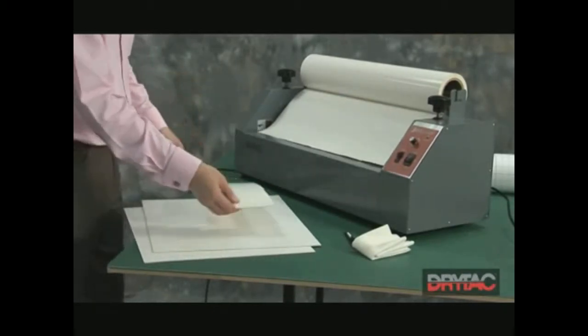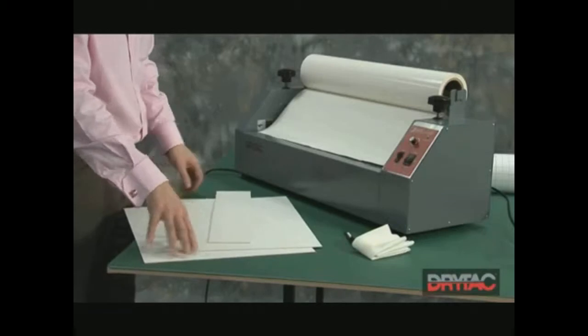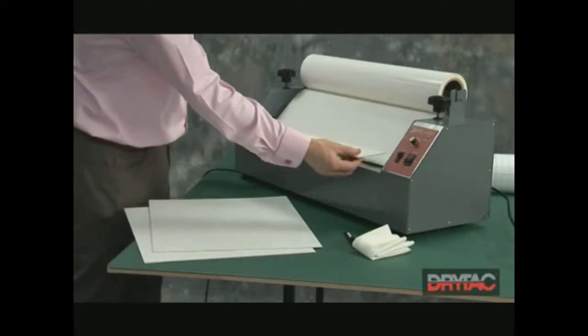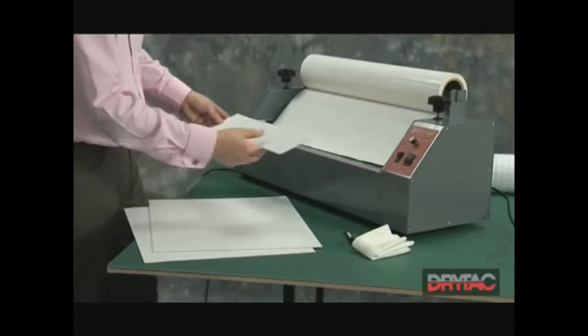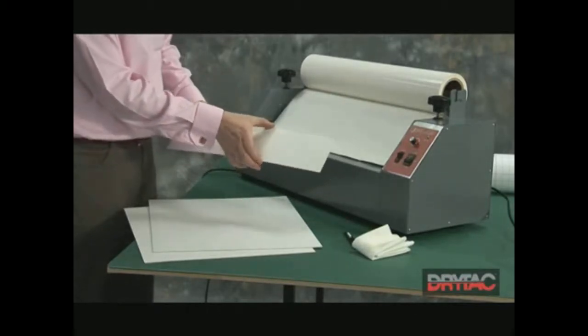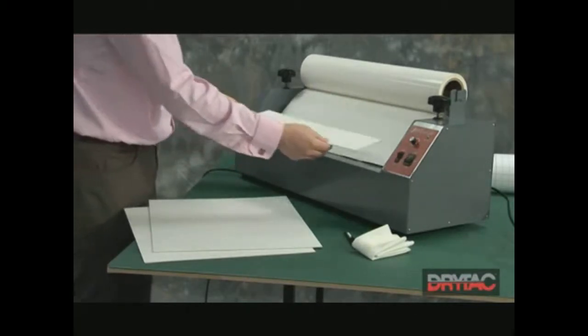We're going to use a scrap piece of board the same thickness as the boards that we're looking to coat up, which is about the same width as the material and approximately three or four inches, or about ten centimeters wide.